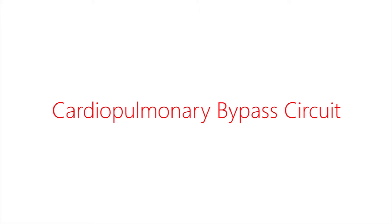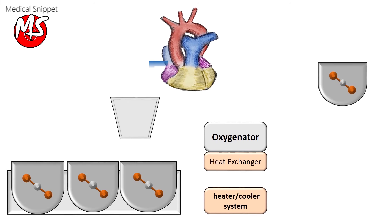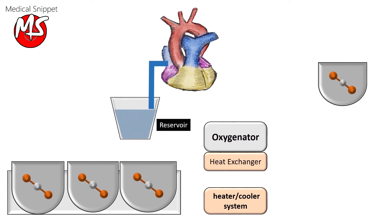Cardiopulmonary bypass circuit. Venous blood is drained from the right atrium, or SVC and IVC separately, into the venous reservoir by gravity siphon.